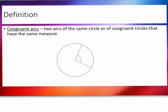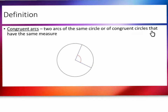Let's look at the definition of congruent arcs. Congruent arcs are two arcs of the same circle, or of congruent circles, that have the same measure. So if we have two circles with arcs of the same measurement, those would be congruent arcs — meaning they have the same measurement.